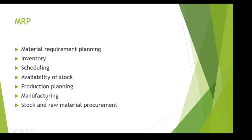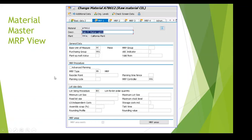MRP also covers production planning and manufacturing. For example, if a company knows they are getting a 10,000 bicycle order, they need to procure the required components, and all those requirements need to have availability dates based on the requirement date. In SAP, we can see the material master MRP view — MRP is divided into four views, and we can see MRP1 view with general data, MRP procedure, lot size, and related settings.